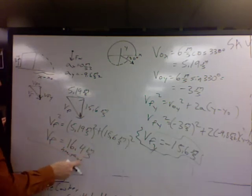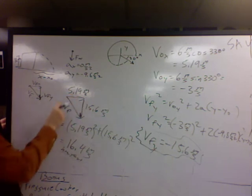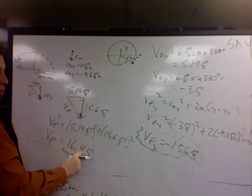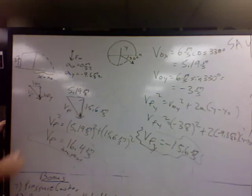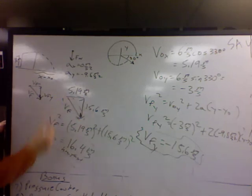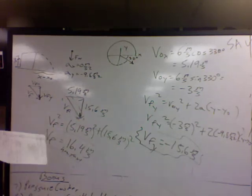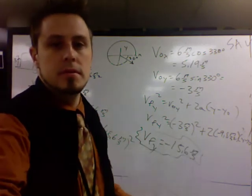If you wanted the direction, you could either find this angle if you've had trig, or you could just say 16.4 meters per second down and to the right. This is the direction that it's going. That's it for problem one. Part two.